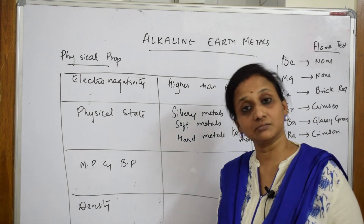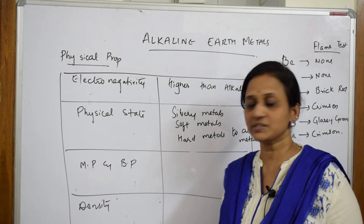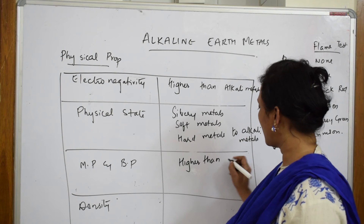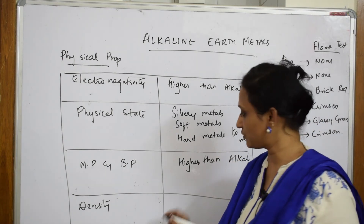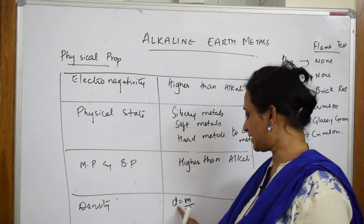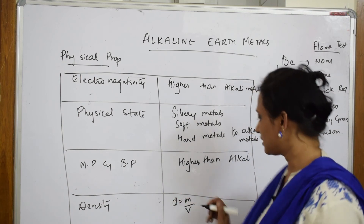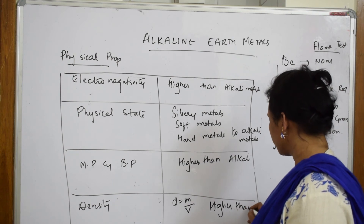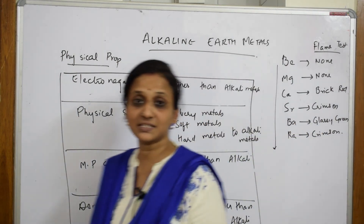For melting and boiling point: the size is smaller so the nuclear force of attraction is more, meaning melting and boiling points are higher than alkali metals. For density: density equals mass divided by volume. As atomic number increases, mass increases, so the density is also higher than alkali metals.